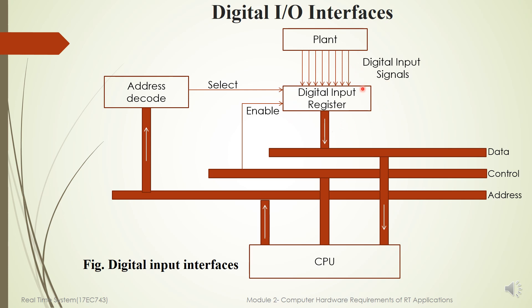Output from the plant is transferred usually one word at a time. The DIR will have the same number of bits as the number of bits in the computer word. It will be receiving logical signals varying from 0 to plus 5 volts. If plant outputs use different levels apart from one word, then some conversion techniques have to be used to make it compatible with the Digital Input Register. The CPU has to read all the data which is present on this Digital Input Register.